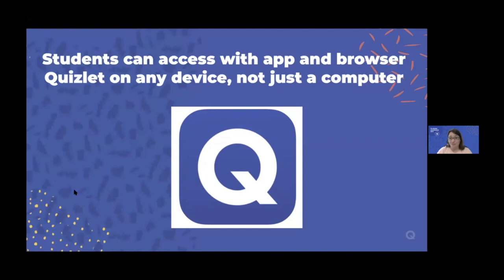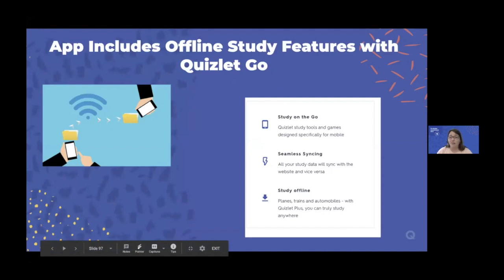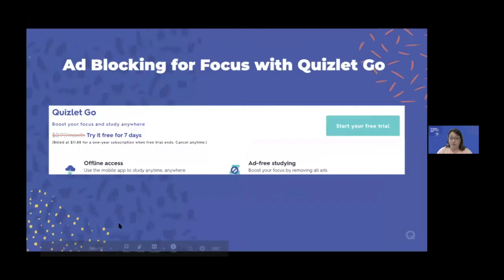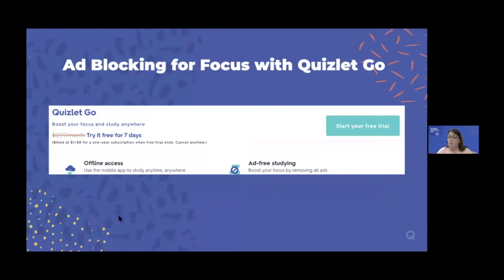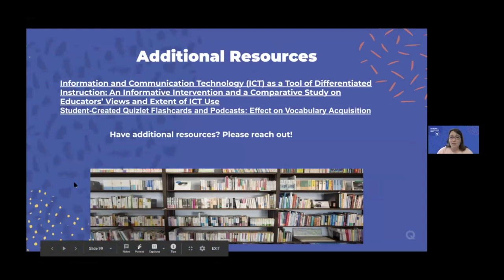The app includes offline study features if the student gets a Quizlet Go subscription, which is really nice. That means they can download sets and study wherever they are without internet — really helpful if students don't have a reliable internet connection. They can download it on their phone so when they don't have internet, they can still look at their Quizlet sets. With Quizlet Go, you can also get ad blocking for the app, which removes distracting features. For students who have challenges reading or anything else, it's really nice to have ads out of the way.